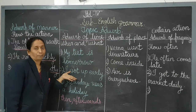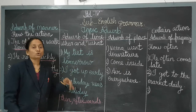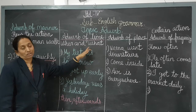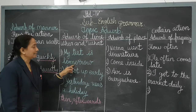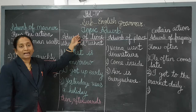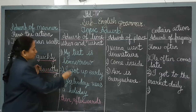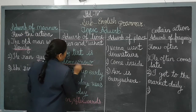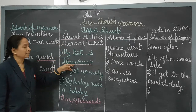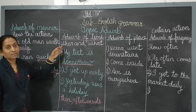Now the adverb of time. Adverb of time tells us when an action takes place — when it is going to happen and what type of action it is. For example: 'My test is tomorrow.' The word 'tomorrow' shows the timing. When is your test? It is tomorrow. So 'tomorrow' shows us the time, and this sentence is an example of adverb of time.